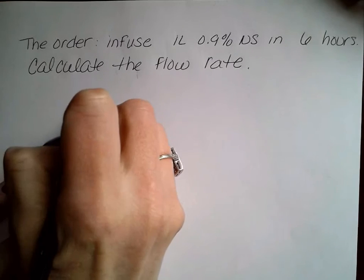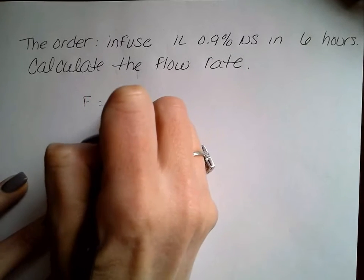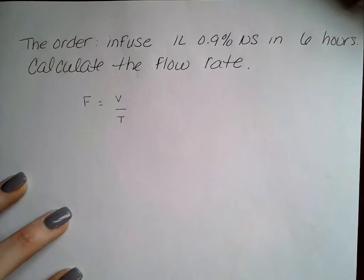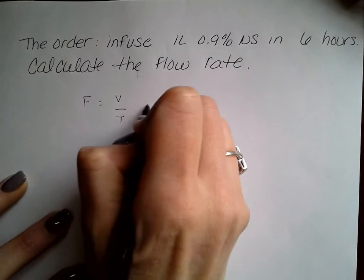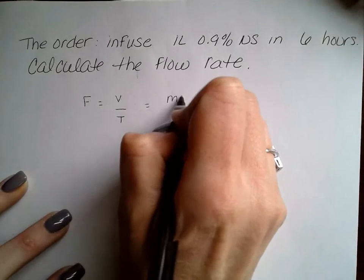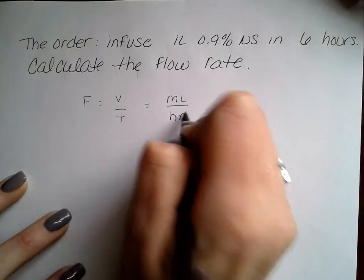We recall that flow rate is equal to the ratio of volume to time. We can assume that we're using a gravity pump because we're not told anything else, so we know that our units are going to be measured in milliliters per hour.